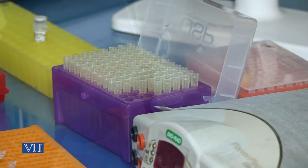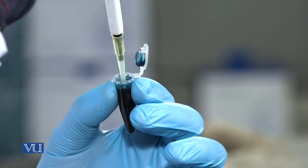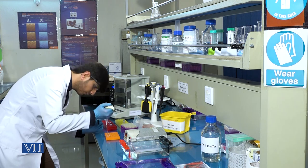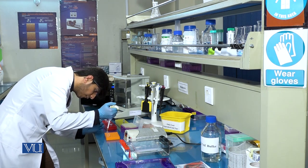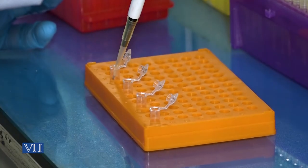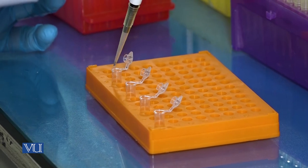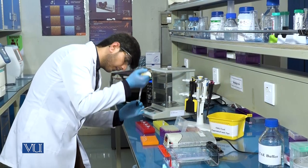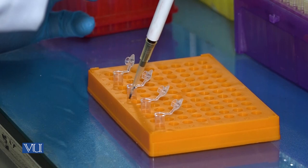For gel loading, 2 to 3 microliters of 6x loading dye and 4 to 5 microliters of DNA template will be taken in PCR microfuge tubes.